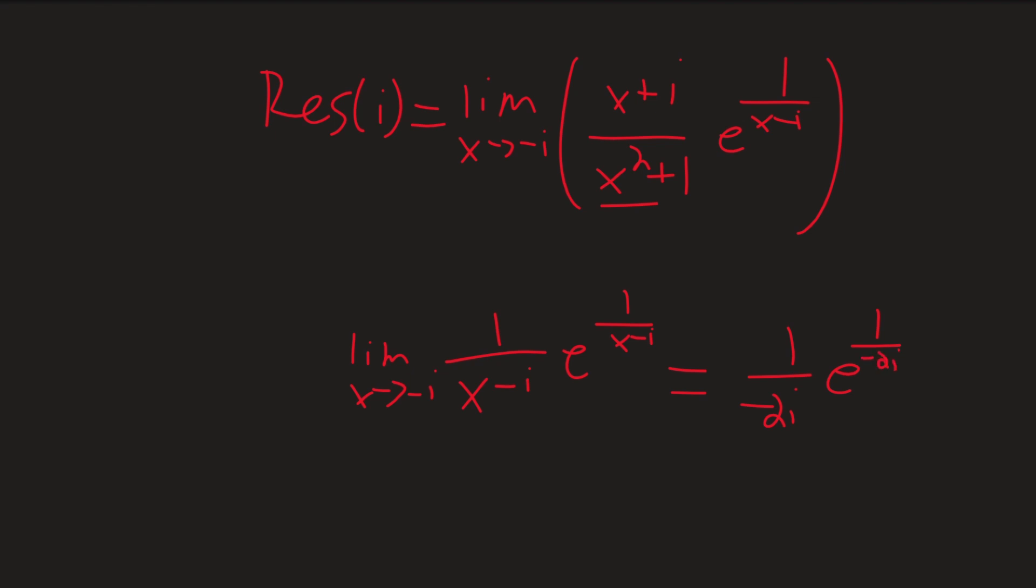So, if we were to multiply both sides, or not both sides, just multiply by 2πi to find our residue, what we find then is our residue is equal to 2πi, sorry, negative 2πi over negative 2i times e to the i/2. And this just comes from the fact that i equals 1 over negative i. Fun fact for you.